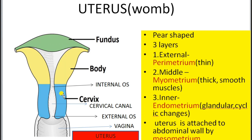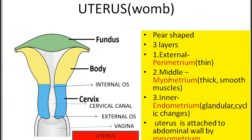The uterus is an inverted pear-like structure. It is divided into three parts: fundus, body, and the cervix region. Cervix means neck-like region. It is about 7.5 centimeters long and 2.5 centimeters thick. It consists of 3 layers: the outer perimetrium, which is a thin epithelial tissue; the middle myometrium, which is thick and contains smooth muscle; and the innermost layer, the endometrium.